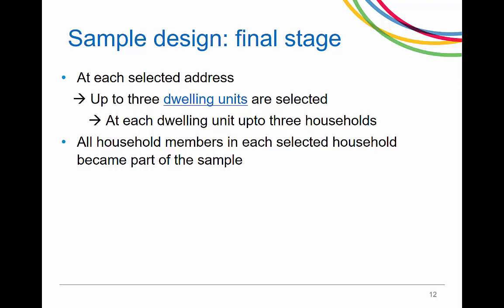The discussion of the samples until now pertained to how addresses were selected. After that, at each selected address, as long as it was a residential address and was occupied as the main residence, up to three dwelling units were selected. For example, if the address was an apartment building, a dwelling unit refers to an apartment. But if the address was a house, that would just be one dwelling unit. If there was more than one household at each dwelling unit, which was not very common, up to three are randomly selected. All household members in each selected household became part of the sample.